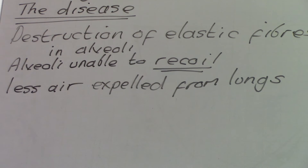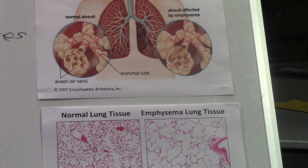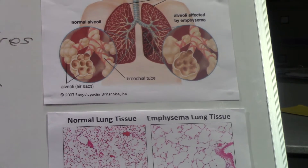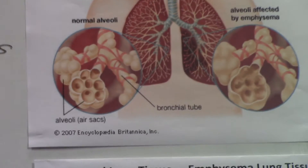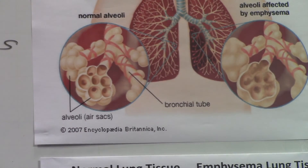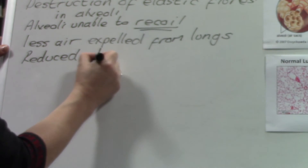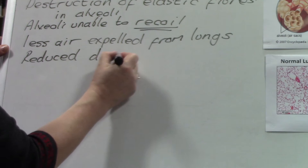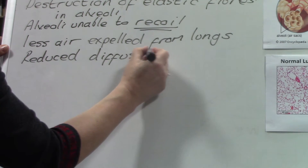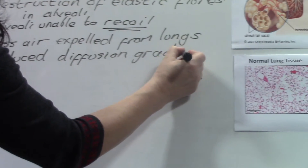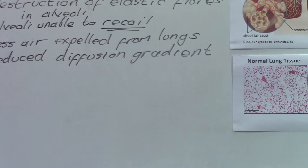This means that fairly stagnant air remains in the alveoli, and it's quite high in CO2 and quite low in oxygen. This means there's actually a reduced diffusion gradient between the blood and the alveoli.